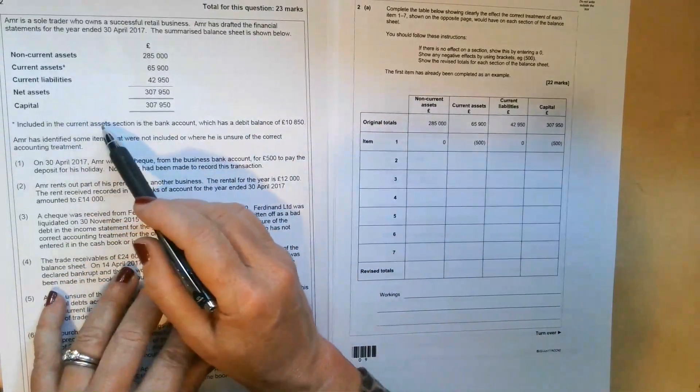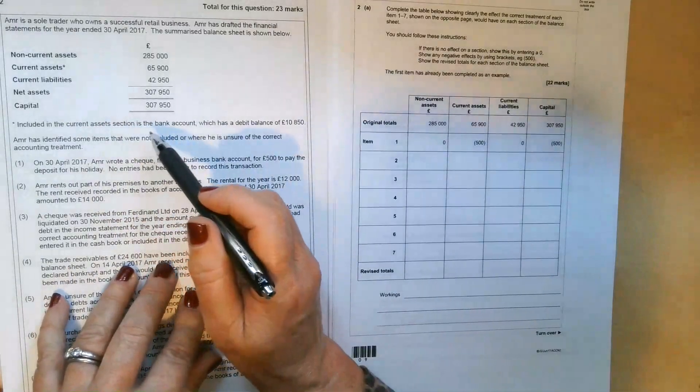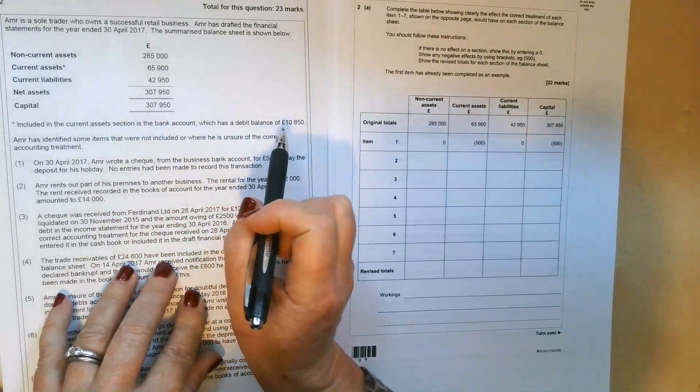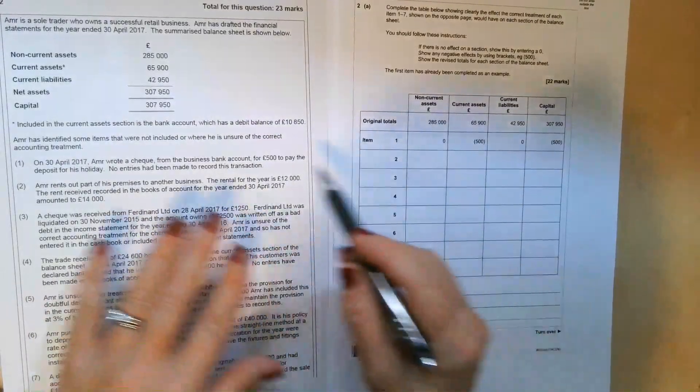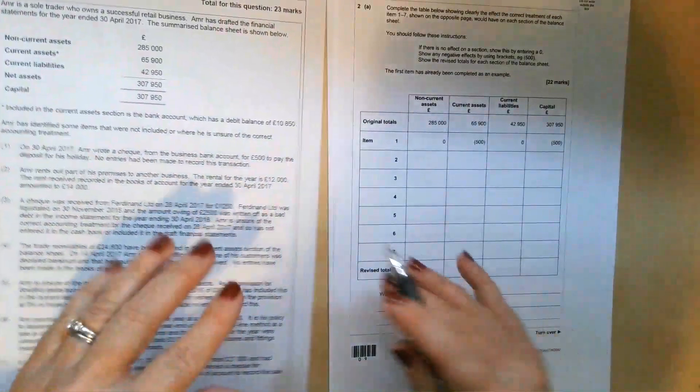It also tells you that included in the current assets section is the bank account, which has a debit balance of £10,850. So it's a debit balance, it's an asset, belongs in current assets. So that means he's got money in the bank.